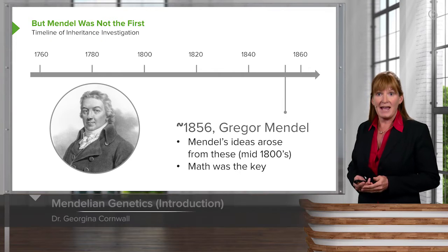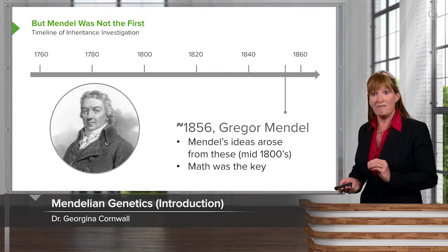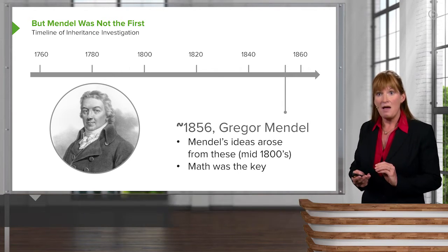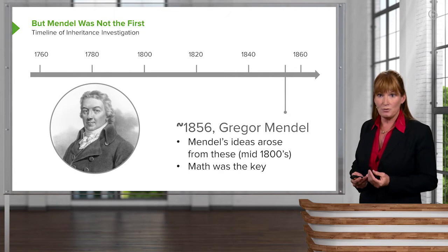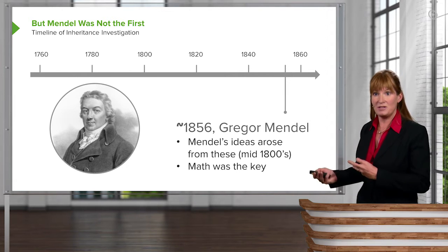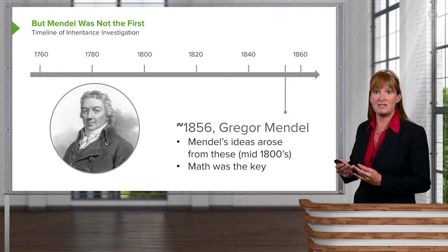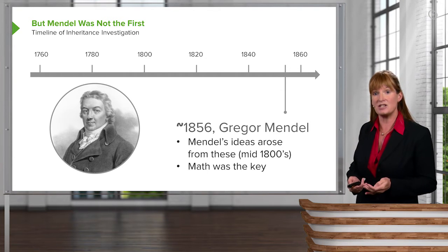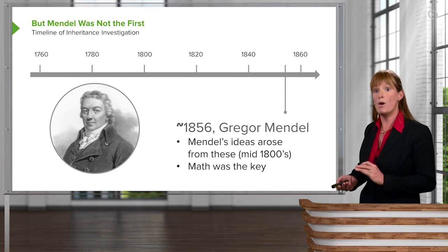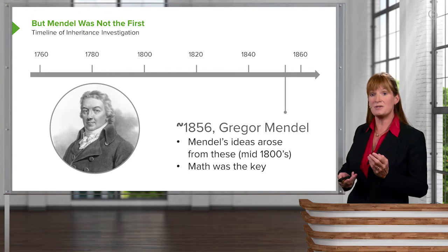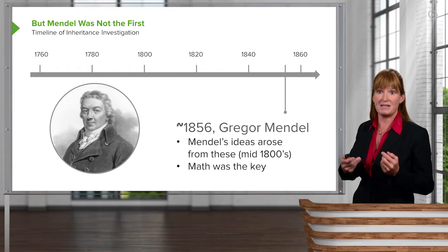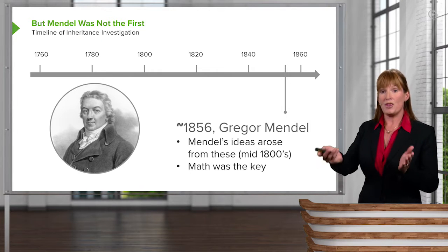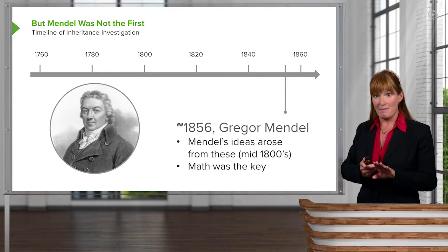Gregor Mendel came along, and the key for him was his background in mathematics. Mendel was a very well-schooled man, and he could put together his understanding of science with his understanding of mathematics and make some predictions about what might have been going on. This is where he came up with the concept that there were two alleles for the same character.